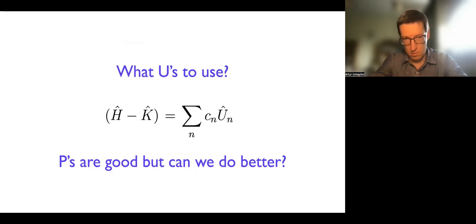And once we know how to modify the Hamiltonian to reduce the spectral range, we now can ask a different question: whether we can find unitaries that produce better one-norm than say simple Pauli products, right? So they are good, but can we do better?